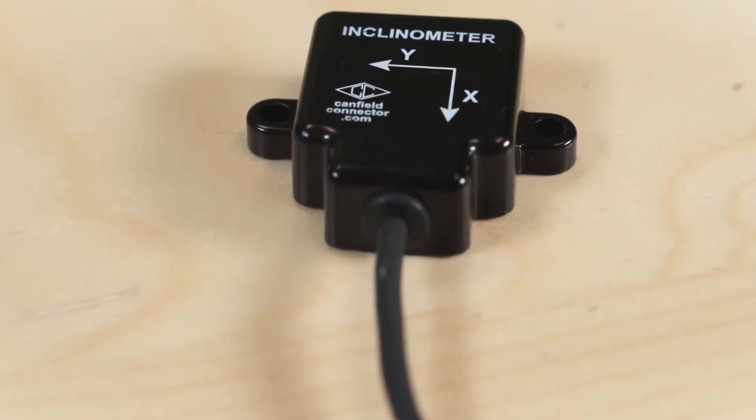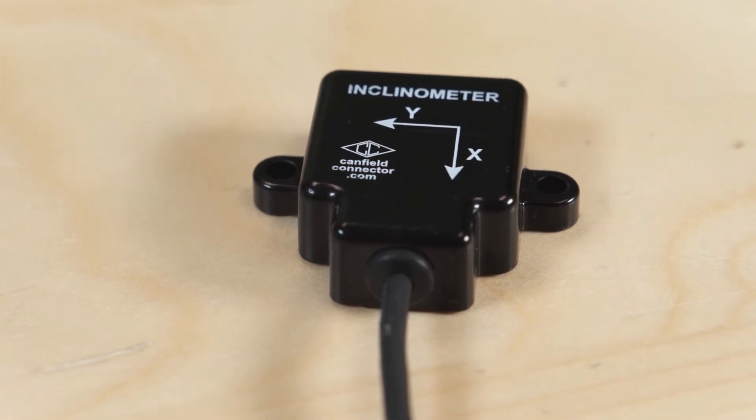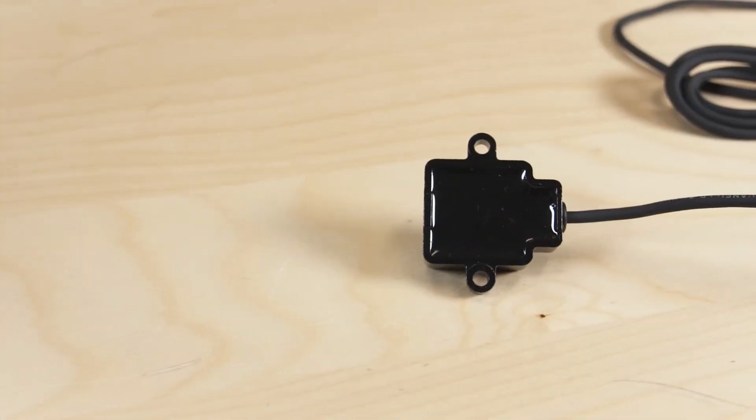No matter you call it an inclinometer or a tilt meter, the EIS is designed to measure tilt. It offers 0.3 degrees accuracy plus or minus 85 degrees.